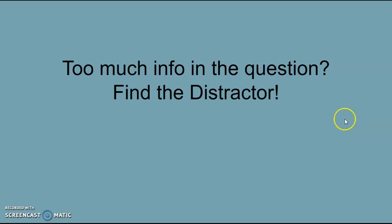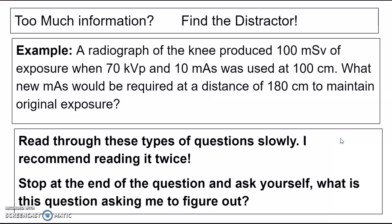All right, last few on inverse versus direct square law. So what happens if you have too much info on the question? Or how do you decide when you have too much information, what's the distractor? What's there just to confuse you? So I have just, I think, two examples of those to help you figure that out.